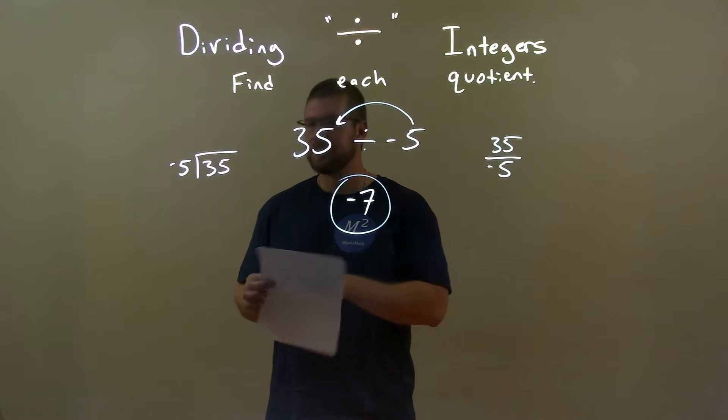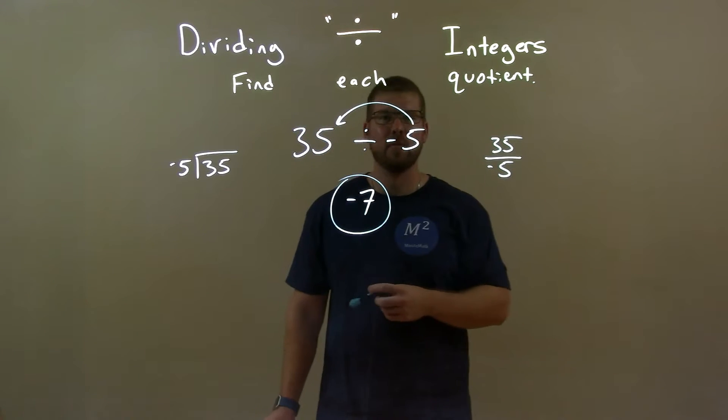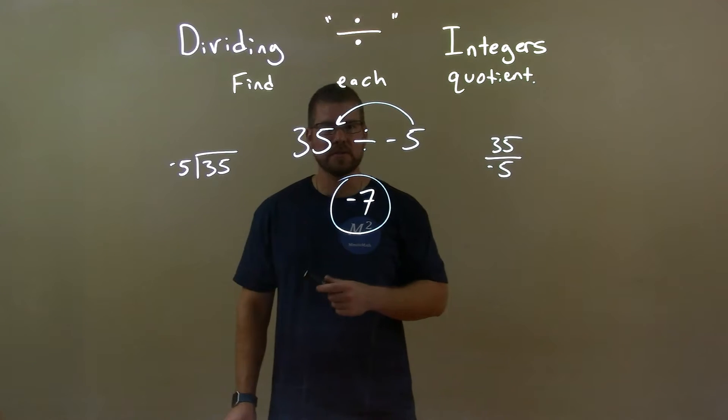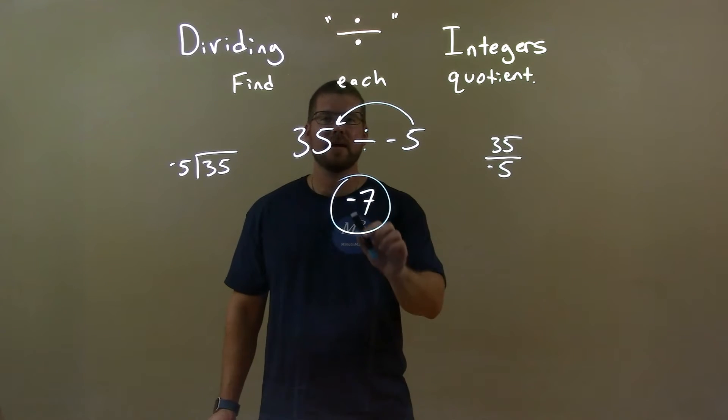So, quick recap. We're given 35 divided by negative 5, and we had to find that quotient. We know 5 goes into 35 seven times. Since we're dividing by a negative, we keep that negative. A positive divided by a negative is a negative. So our final answer is negative 7.